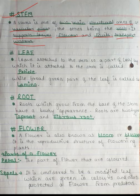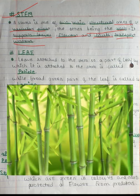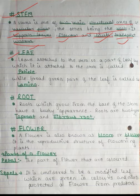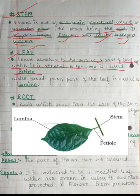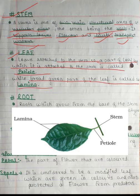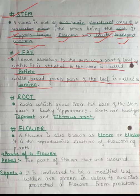Now we can talk about the leaf attached to the stem. The part of the leaf which is attached to the stem is called the petiole. The broad green part of the leaf is called the lamina. The leaf is used in photosynthesis — the process by which plants make their own food using sunlight.